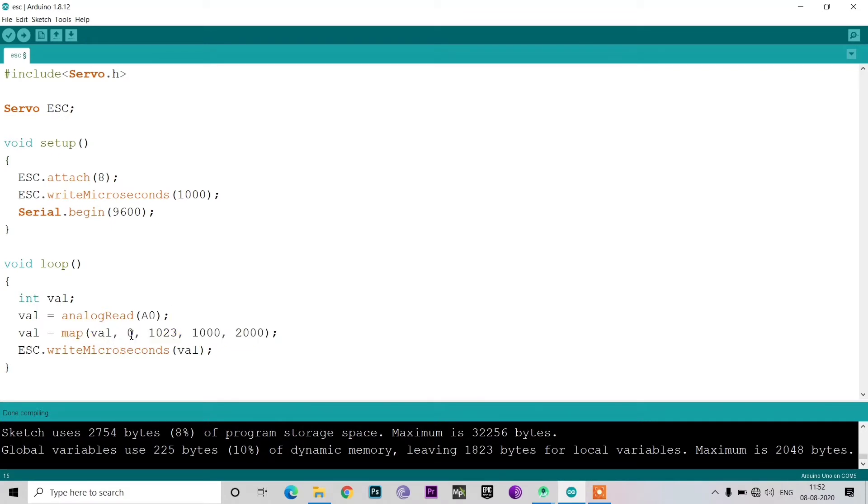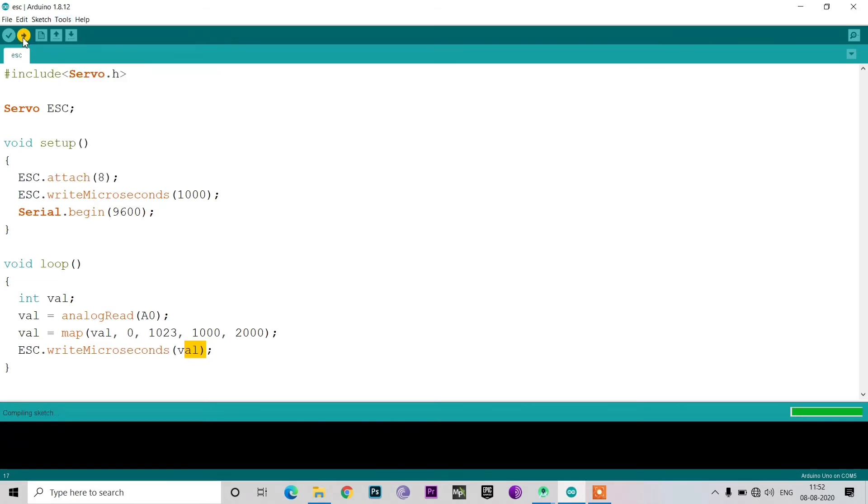Then here is the map of those values. So 0 to 1023, that's the value of the potentiometer, and 1000 to 2000 is the value of the ESC. And then we will write the ESC in the value val, which is defined over here. Now let's go to the tools and select our COM port, which is COM5, and then just upload the code.